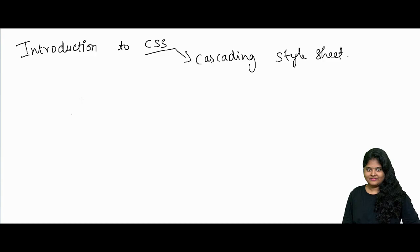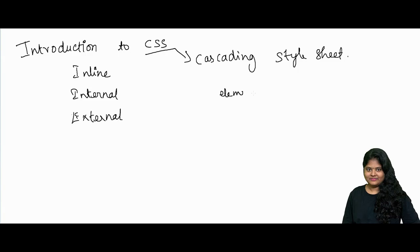Initially CSS started with decoration and small designing purposes, and currently the latest version uses multiple animation options. In CSS we have three types: inline, internal, and external. CSS can be written like this — element, class, or ID — open curly bracket and close. Here the property name, for example, is background-color.